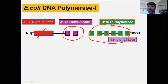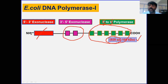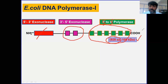The molecular weight of this protein is 109 kDa and it consists of 928 amino acids. To summarize: the 5' to 3' exonuclease activity is at the N-terminal, the 3' to 5' exonuclease (proofreading) activity is in the middle, and the 5' to 3' polymerase activity is at the C-terminal.